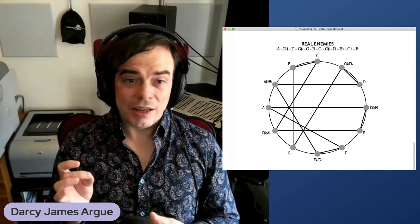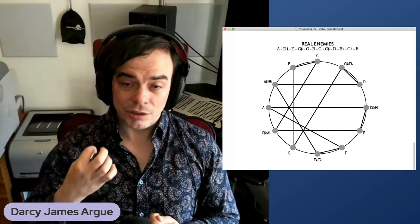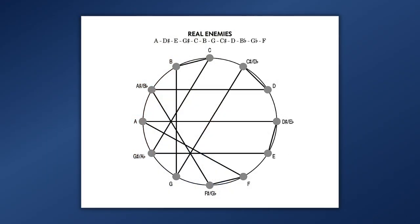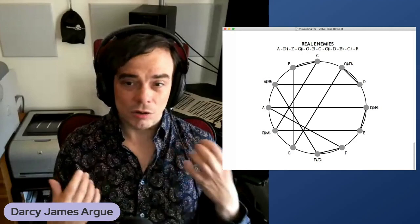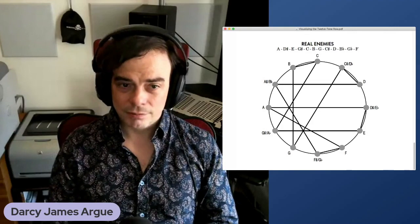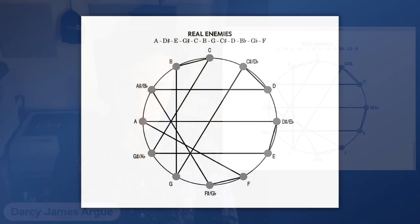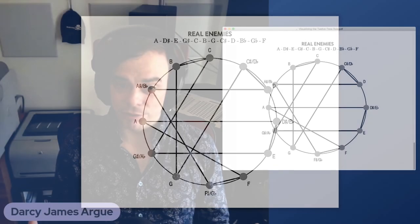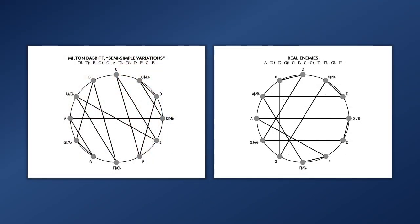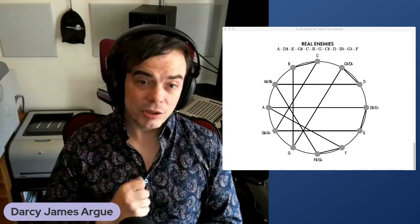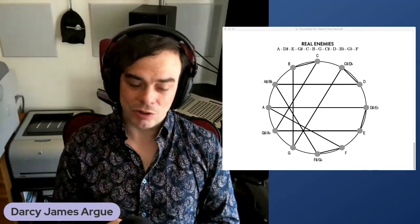One of the elements that this visualization makes obvious is the location of tritones. If you have a line that crosses through the center of the circle from A to E flat or from G to D flat, those are always going to be tritones. And so you can see that this row has also a certain amount of symmetry to it. The first three notes are the same as the first three notes of the second half of the row, but the other pitches are slightly different. It is not symmetrical the way the Babbitt row is. You can see that by looking at it. So let's listen to a little bit of how I put this row into practice in the first chapter of Real Enemies, chapter zero, it is called You Are Here.